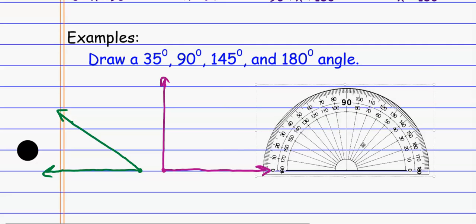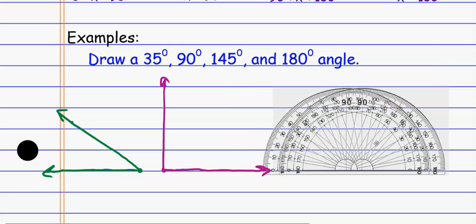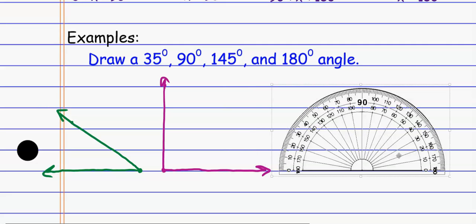The next one asks me to draw a 145 degree angle. Let me space this thing out a little bit more. Once again, I can use the inside or the outside track. I'll use the outside track this time.